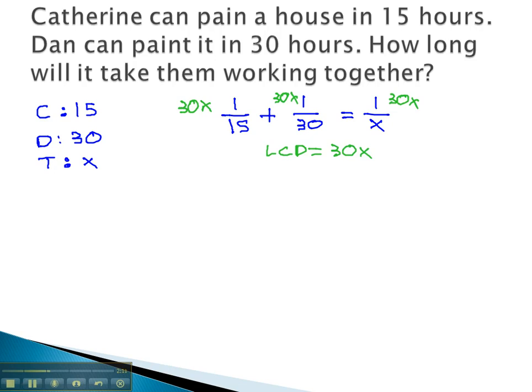As we do, we can reduce out 30 over 15 is 2. The 30's divide out, and the x's divide out. We end up with 2x times 1, or 2x, plus 1 times x, or x, equals 30.